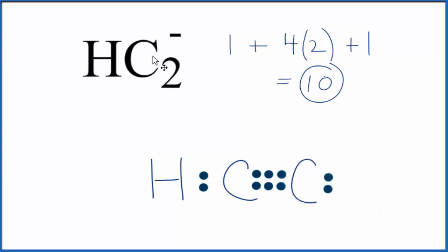So this is the Lewis structure for HC2 minus. We have eight valence electrons for each carbon and the hydrogen has two. We've used all 10 valence electrons.